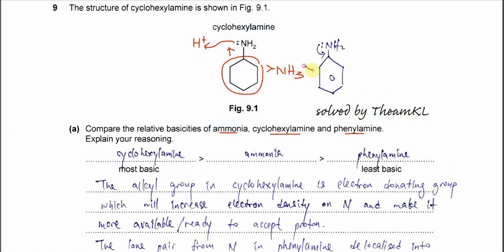Ammonia is more basic than phenylamine. Phenylamine is the least basic because the lone pair on the nitrogen delocalizes into the ring, meaning it is not always available. Since this lone pair is less available, it is less likely to bond with or gain a proton.